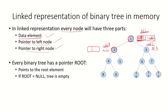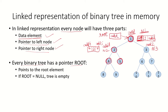Similarly, node 2 would have the data element, then a pointer to node 4 — so the address of node 4 will be stored — and the address of node 5 would also be included as part of node 2. Also, every binary tree will have a root pointer, and this is going to store the address of the root node of the tree. Just as a linked list has a head pointer, this binary tree, since it's represented as a linked list, will have a root pointer storing the address of the root node.